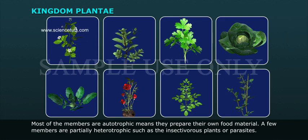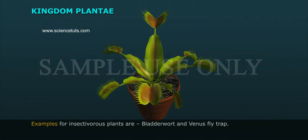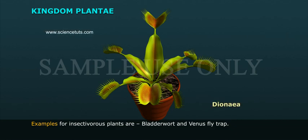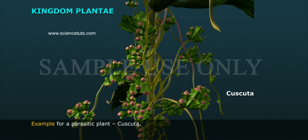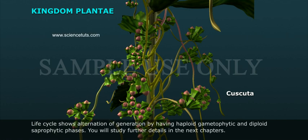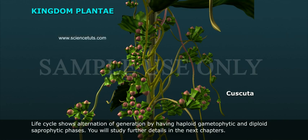Examples of insectivorous plants are bladderwort and Venus flytrap. An example of a parasitic plant is Cuscuta. The life cycle shows alternation of generations, having haploid gametophytic and diploid sporophytic phases.